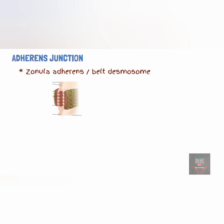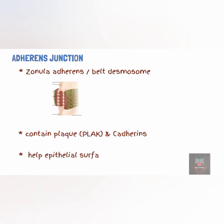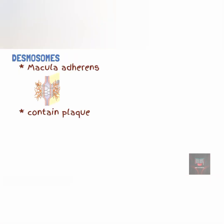Adherence junctions contain plaque proteins and transmembrane glycoproteins called cadherins. They join cells together by a very strong bond, thereby resisting the separation of epithelial cells when acted upon by various forces, such as the contractile activities that happen when food moves through the intestines.